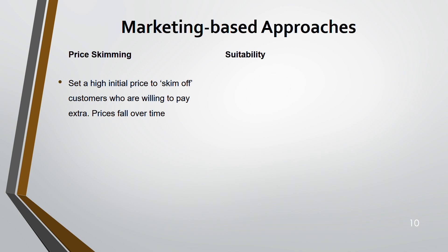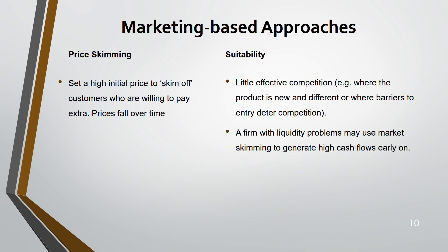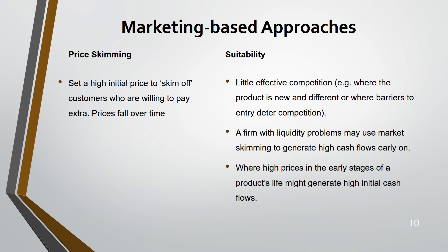IT and technology firms are mostly in this sector — they charge high because they've also invested heavily, so it makes sense. Competition must be very low for you to adopt this strategy. It works where the product is new and differentiated. A firm with a liquidity problem may also use market skimming — charging very high prices initially generates high cash flows early. Products using this strategy usually have a short life cycle: come to market, charge a high price, get maximum profit, and then launch a new product.